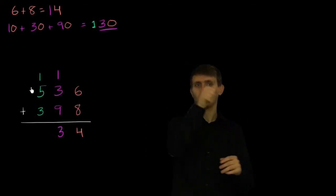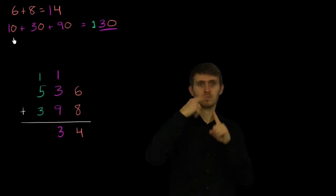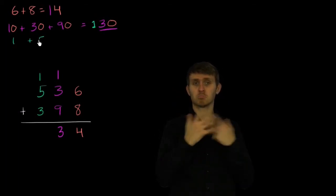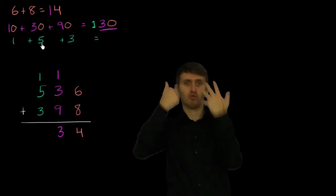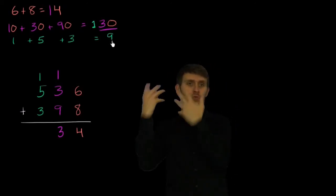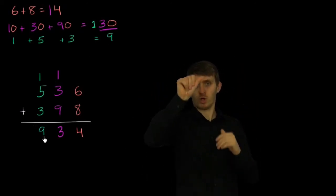And now we're adding up the hundreds place. 1 plus 5, 1 plus 5 plus 3 is equal to, let's see, 1 plus 5 is equal to 6, plus 3 is equal to 9. But we have to remind ourselves, this is 900. This is in the hundreds place.